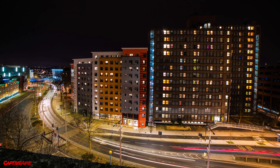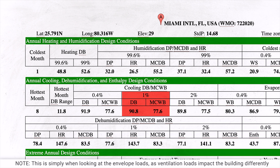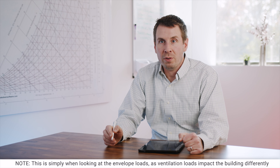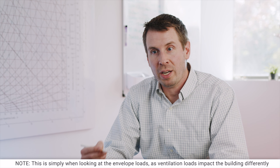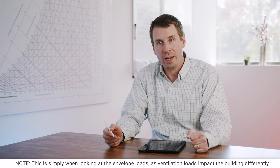The most common design conditions for heating and cooling would be the ASHRAE 1% cooling design day and the 99% heating design condition day. The 1% cooling design day means we'll only go above that temperature 1% of the year; on the opposing side the 99% heating design condition gives a peak design value without going too oversized or too undersized.